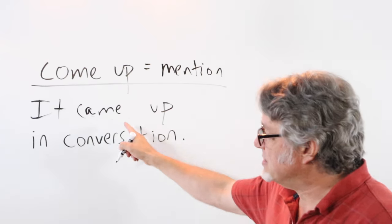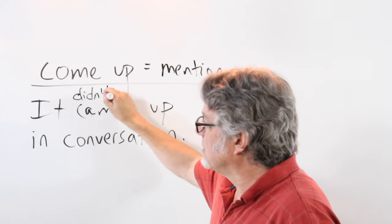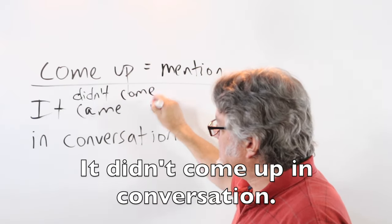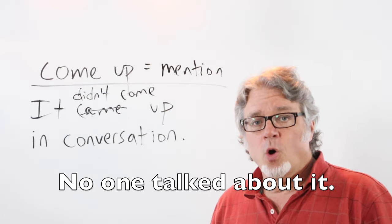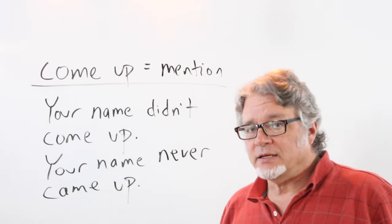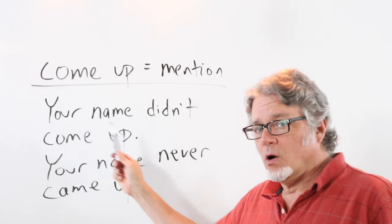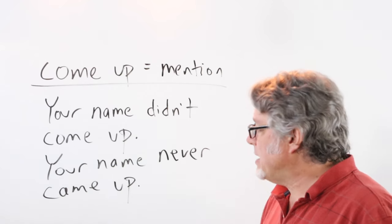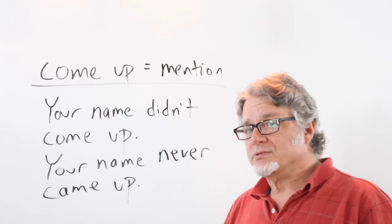It came up in conversation. And to make this negative for the past tense, it didn't come up in conversation. This means that no one talked about it. Your name didn't come up. No one mentioned your name, or your name never came up. Both of these are in the past tense.